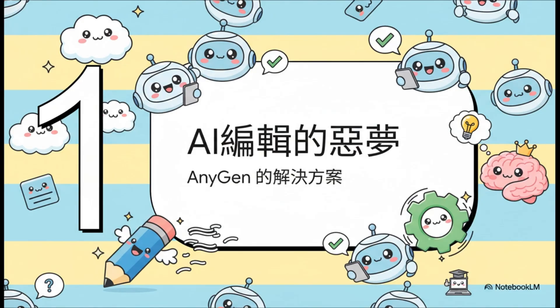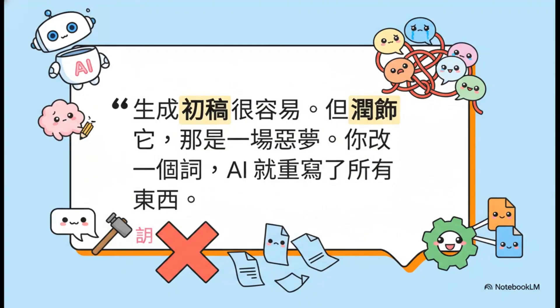只要你用过AI来写东西，一定懂那种感觉：AI帮你生出第一版草稿，真的超快。但真正的噩梦是从你开始动手修改草稿才开始的。你可能只是想改一个字，或者调整一下语气，结果AI把整段都给改掉了，甚至整篇重写。